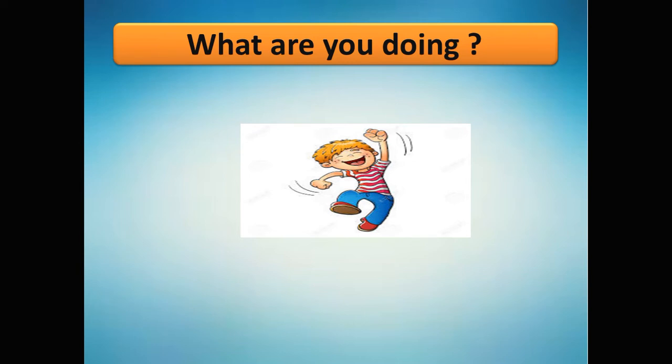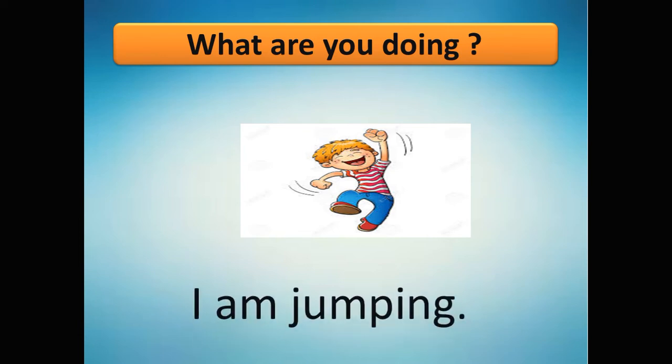Now, do you think 'I am jump' is correct? No, teacher! Because we agreed: after 'am' or 'are,' you have to add '-ing' to the verb. So the correct answer is: 'I am jumping.' You are right!